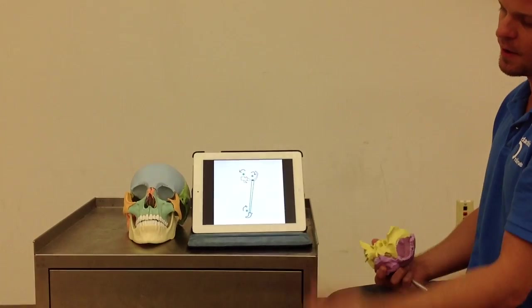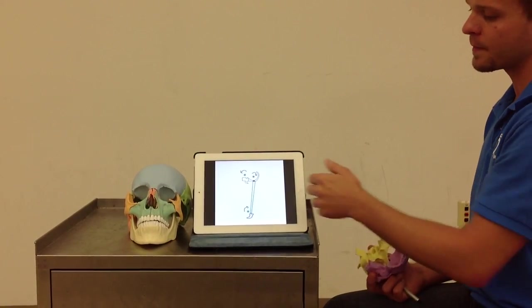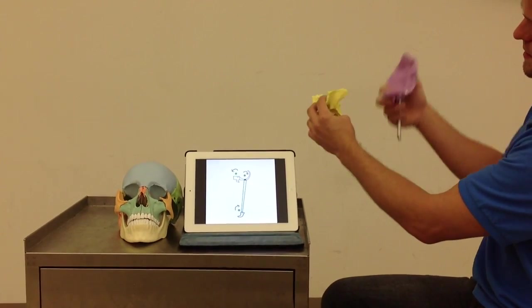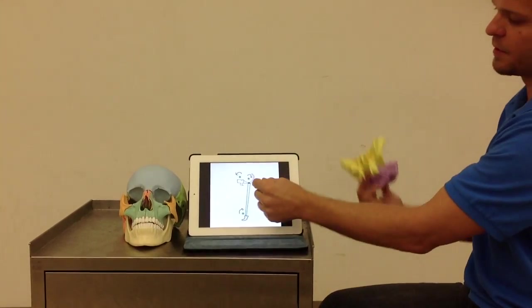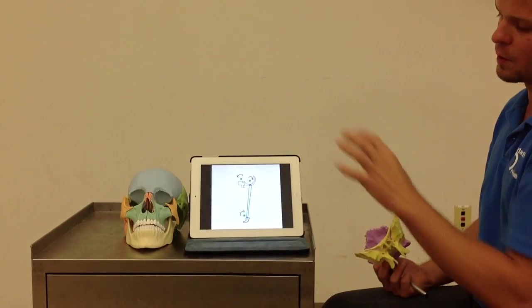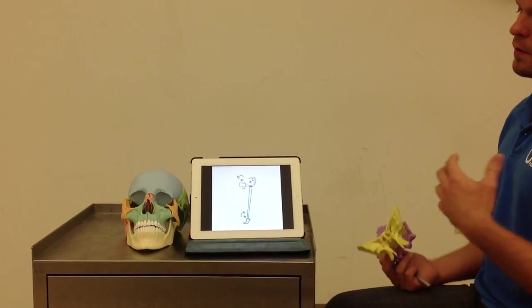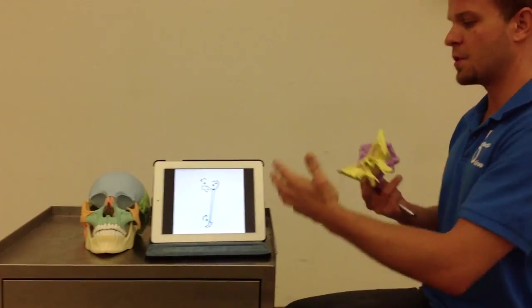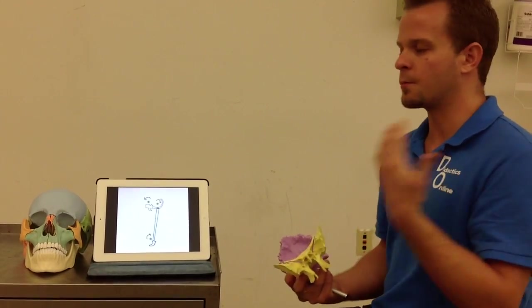If the sacrum moves posterior, it's considered flexion within the cranial mechanism. Likewise, if the sphenoid tips backwards into extension and the occiput tips forward, that's going to create a little bit of drag on the dura that allows the sacrum to rest forward into its sacral flexion postural position, or its cranial position of extension. So it's really important to understand that those are going to be conflicting terms to what you're probably used to.